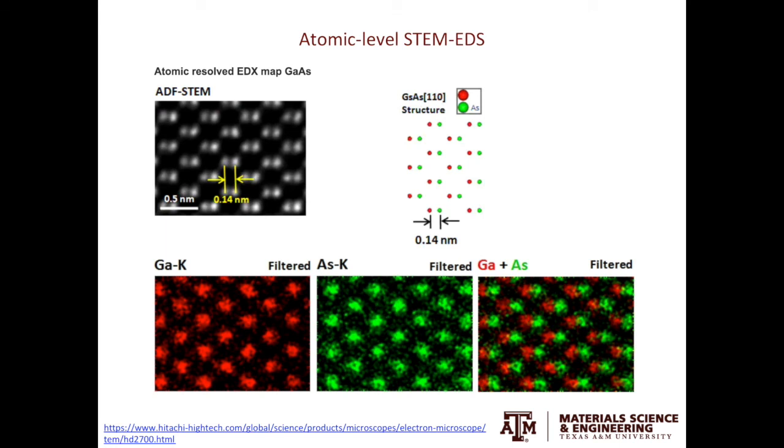I took this image straight from the Hitachi website. On the top left is the annular dark field STEM image of gallium arsenide. You can see the atomic columns but cannot tell the chemical information. By combining the atomic level imaging and EDS, researchers nowadays can do atomic level EDS to map the chemistry of individual atomic columns. The elemental maps shown down the bottom is just amazing. You can see the individual atomic columns of gallium and arsenic, as well as the combined image.